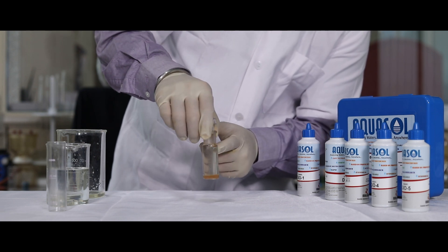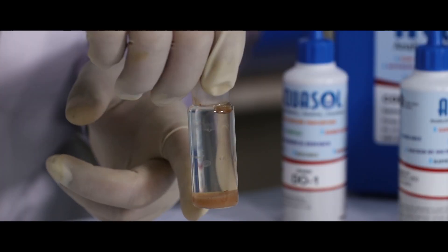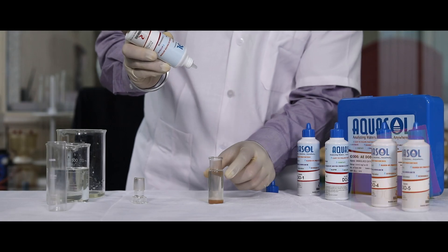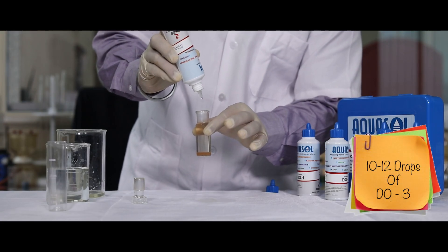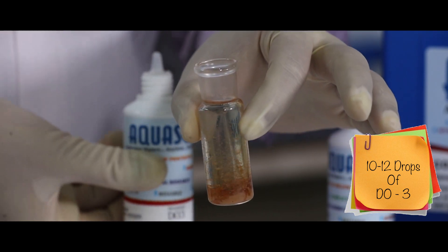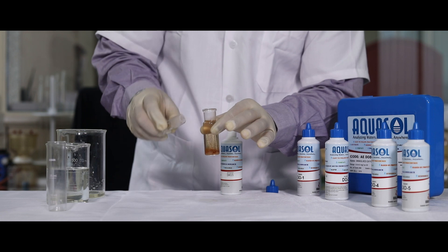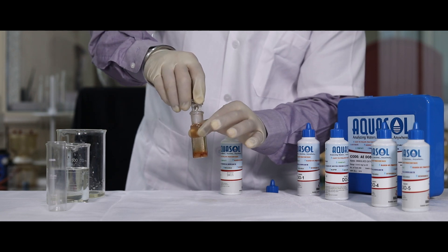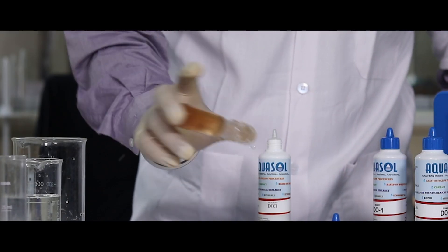After the desired time, there will be a precipitate at the bottom. Now add 10 to 12 drops of DO3 reagent. Place the stopper and mix till the precipitate dissolves.